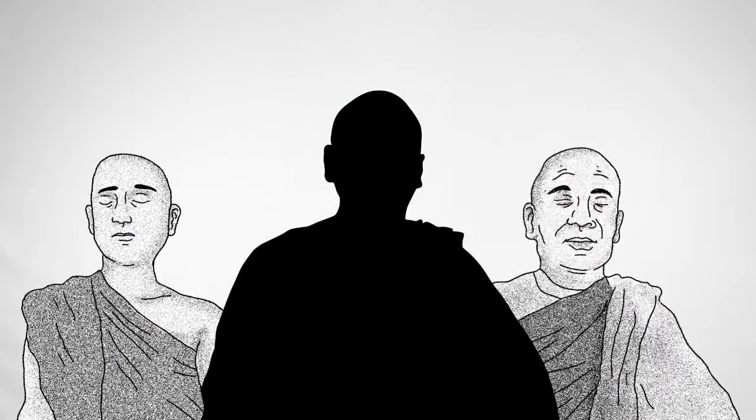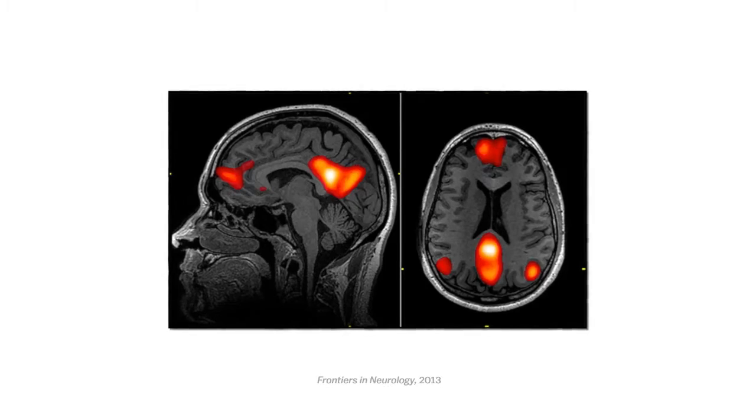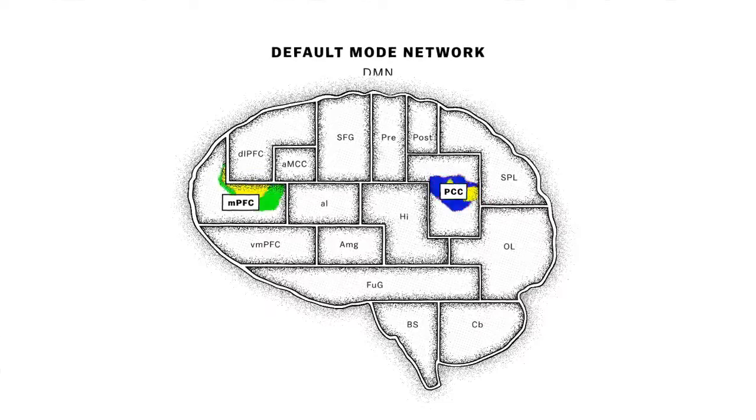I'm thinking about what happened in the past. I'm thinking about the future. And we can see that activity in brain scans, lighting up something called the default mode network, or DMN.